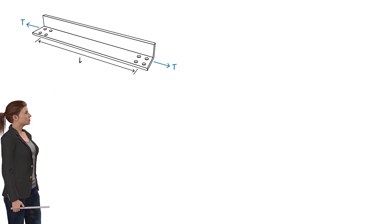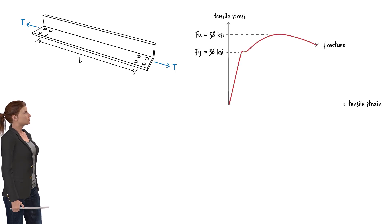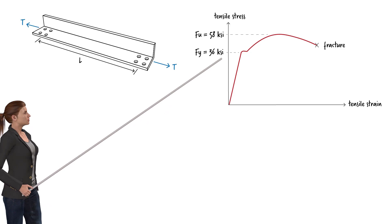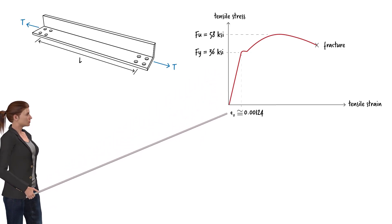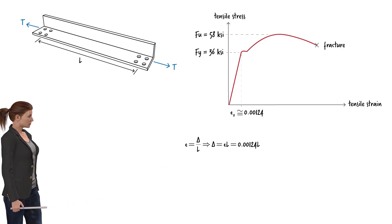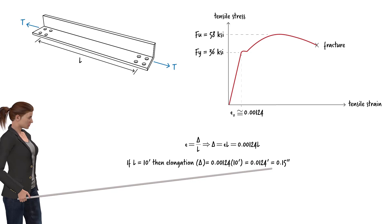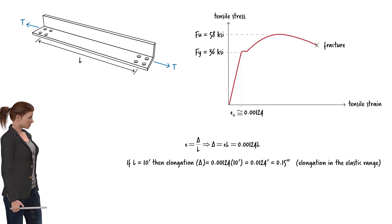A large axial force affects the tension member in several ways. As the axial force increases, so does the axial stress, causing the member to elongate. According to the stress-strain diagram for A36 steel, when the tensile stress reaches 36 ksi, the axial strain becomes approximately 0.00124. For a member 10 feet long, it elongates about 0.15 inches. This is a reversible elongation — if we remove the load, the member assumes its undeformed shape.